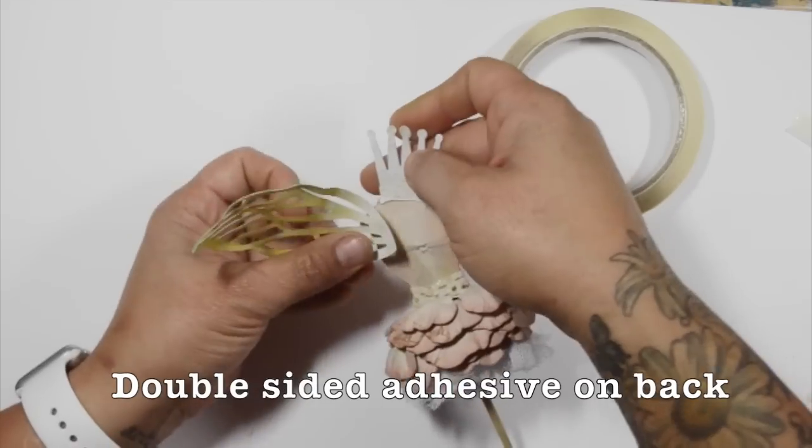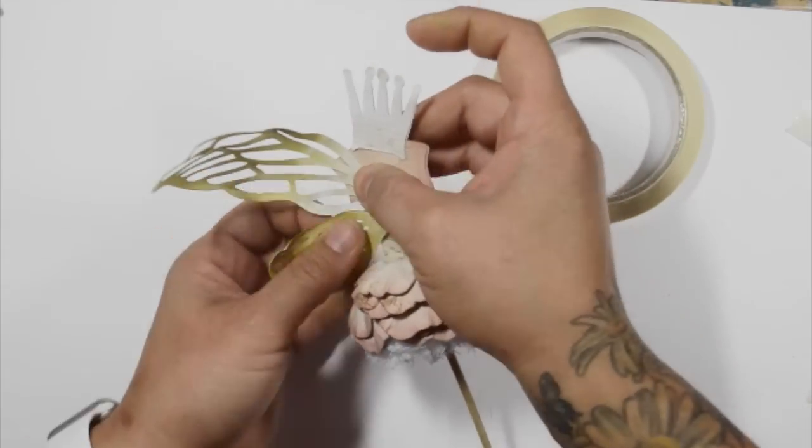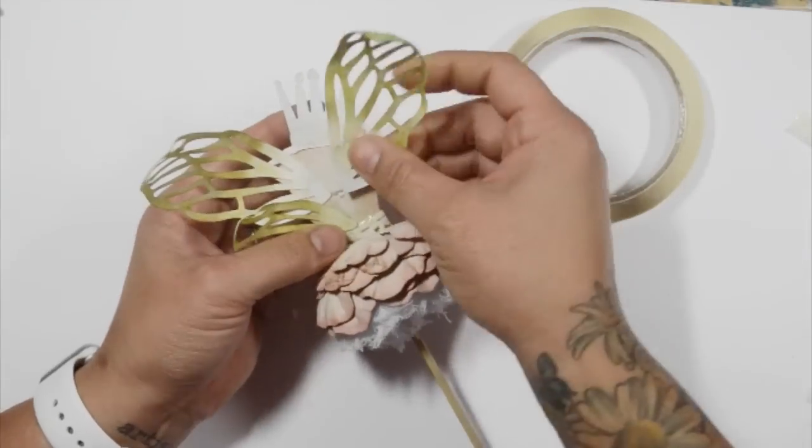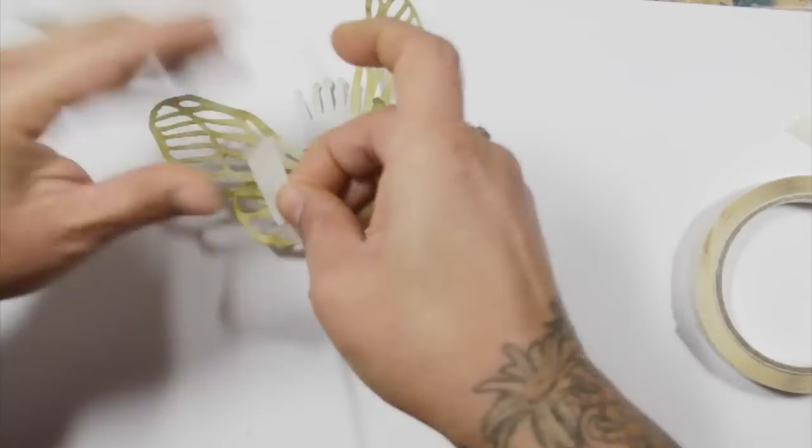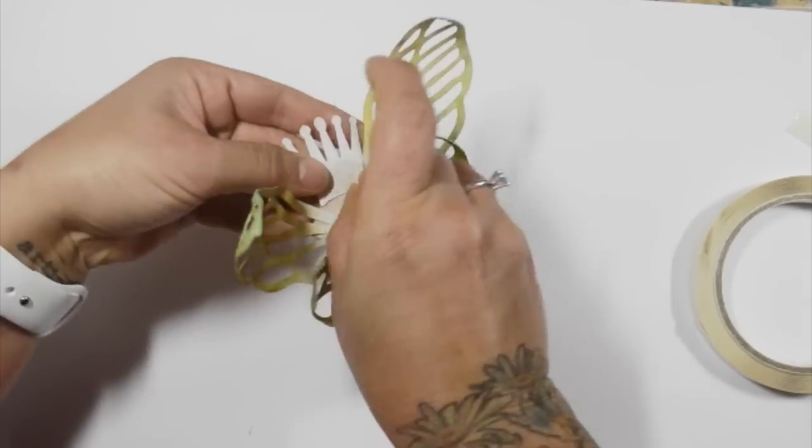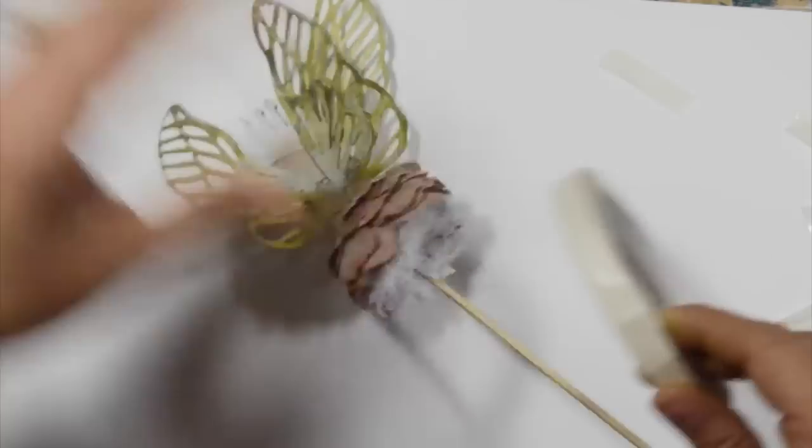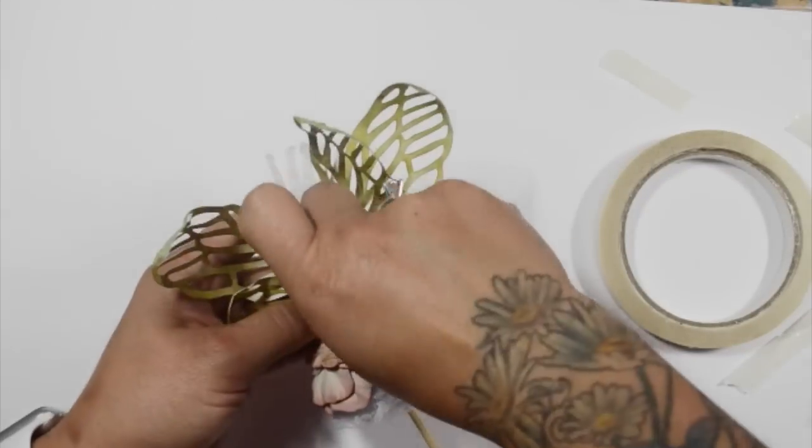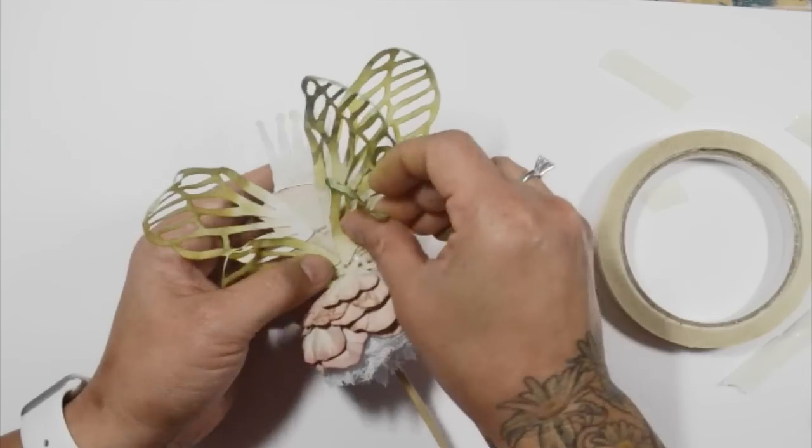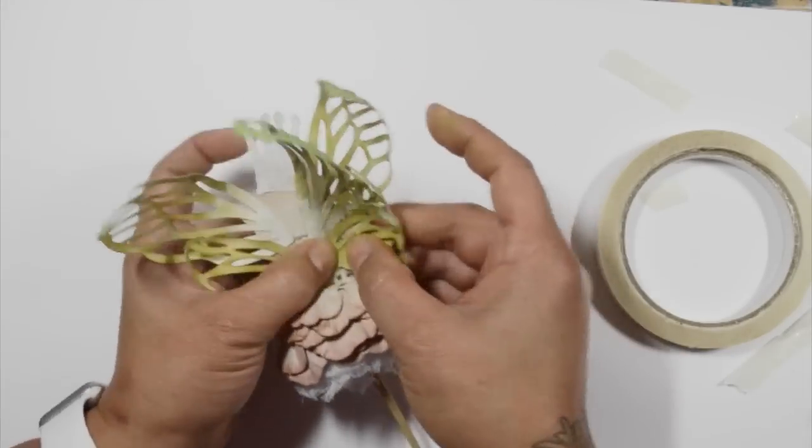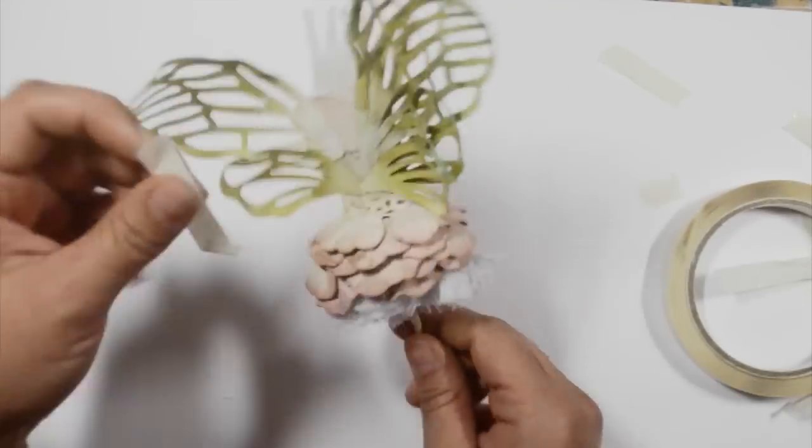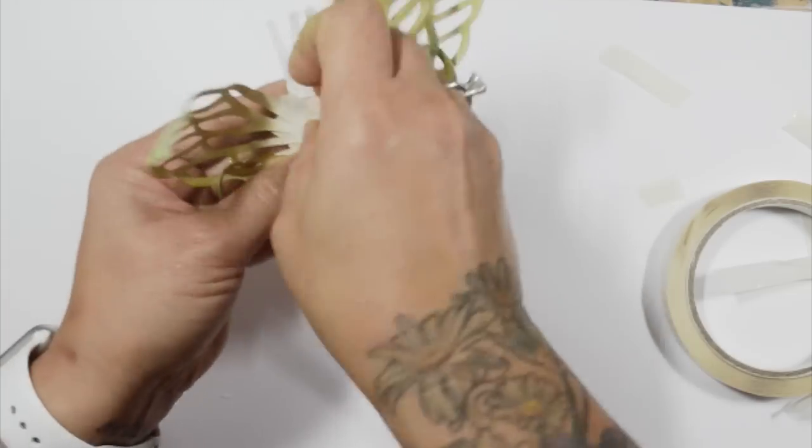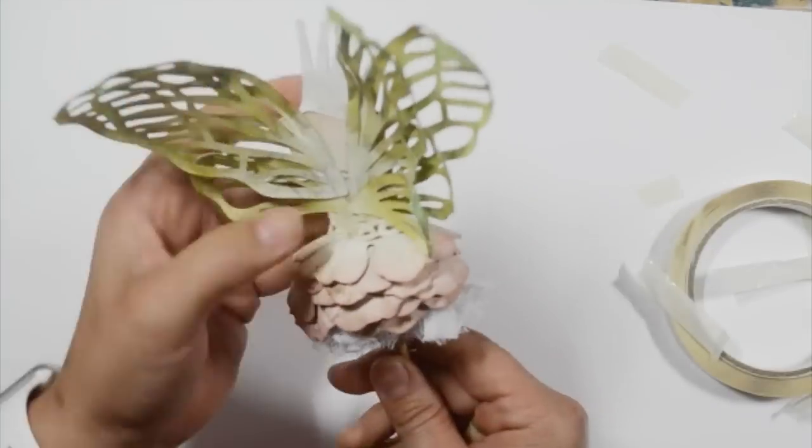I added some double-sided adhesive to the back of the body to adhere the wings, and then I added a little bit more on top of it to add the second layer of wings. I called this a garden fairy princess dress form because the dress looks like it's a flower and the wings look like they could be plant-based. So I'm just adding more adhesive for that second layer.